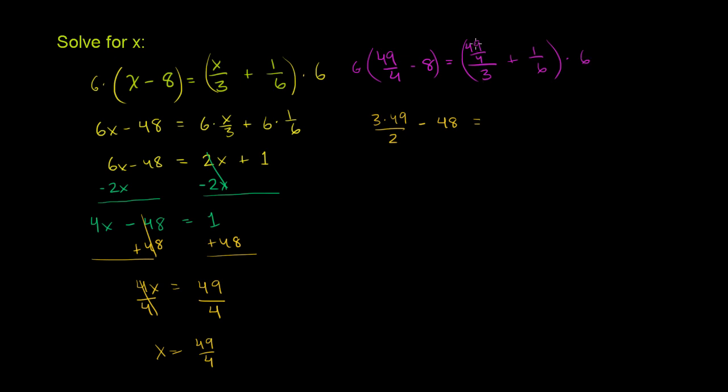So this is going to be 3 times 49 over 2 minus 48 will be equal to 6 divided by 3 is 2. So it's going to be 2 times 49 over 4, which is the same thing as 49 over 2. And then 6 times 1 over 6 is plus 1.